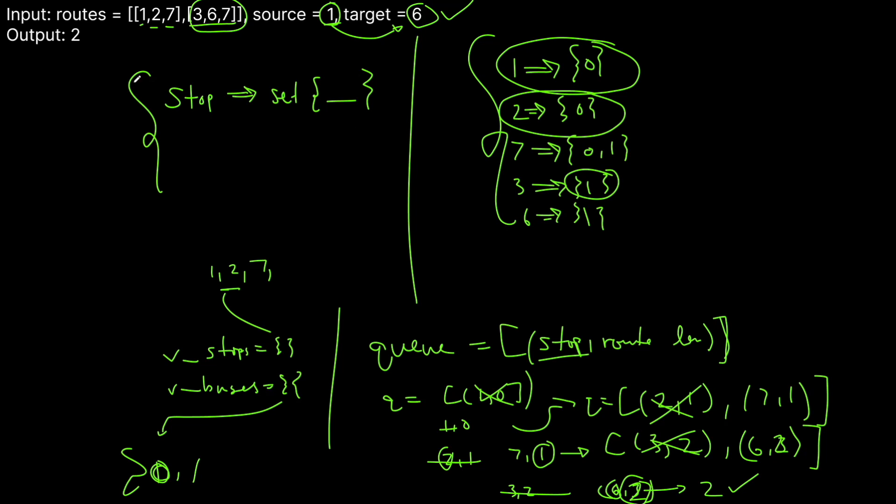That's the answer LeetCode is looking for. If the explanation was a little bit confusing, don't worry — once we go to the code editor and write it out line by line, it's going to be super clear. Usually the diagrams are a bit hand-wavy, but let's go to the code editor — it's going to be a lot clearer.